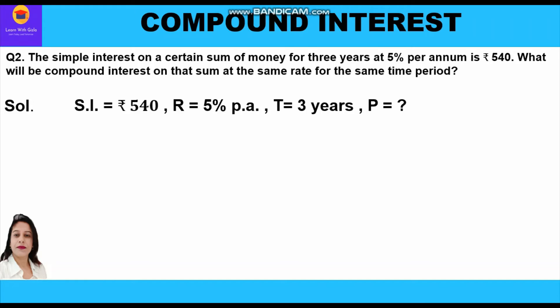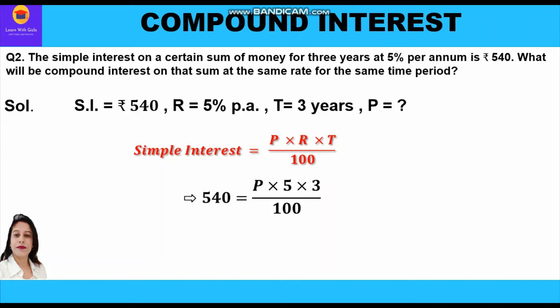Starting the solution: given simple interest = rupees 540, rate = 5% per annum, time = 3 years. We find the principal using the simple interest formula SI = PRT/100.